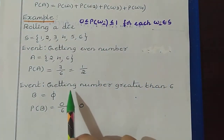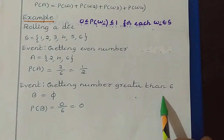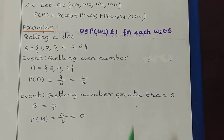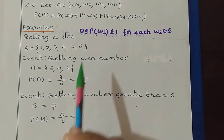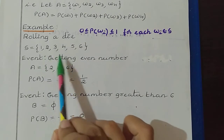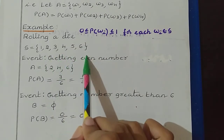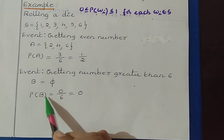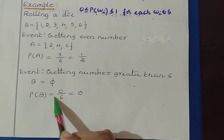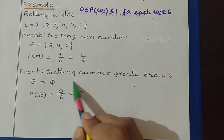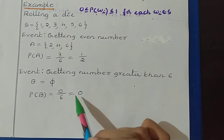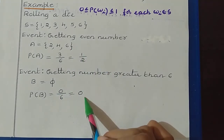Similarly, consider getting a number greater than 6. In this case, for this event we don't have any outcome, because in this experiment we have values only up to 6. So B equals the null set. So probability of B: here we have 0 outcomes, so 0 divided by 6, total number of outcomes, that is equal to 0.